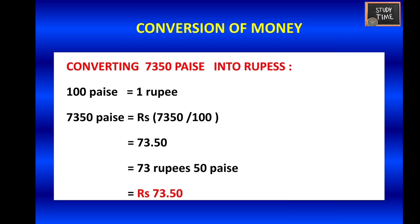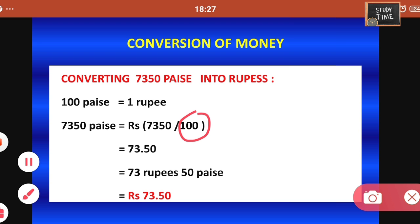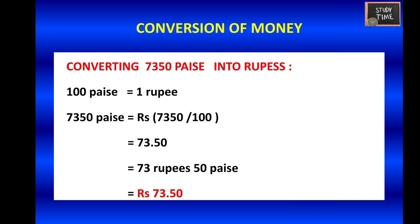Since 100 has two zeros, place the decimal point two digits from the right side. So dividing 7350 by 100, you get 73.50, or you can try the traditional division method. The answer is 73 rupees and 50 paise — that is the answer when you convert 7350 paise into rupees.